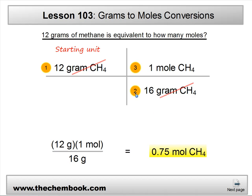Next, in position 2, you'll notice that this is where we have the canceling unit. With dimensional analysis, you always start with making sure you're following the units. And then position 3 is the ending unit, or the fact that we want to go to moles.